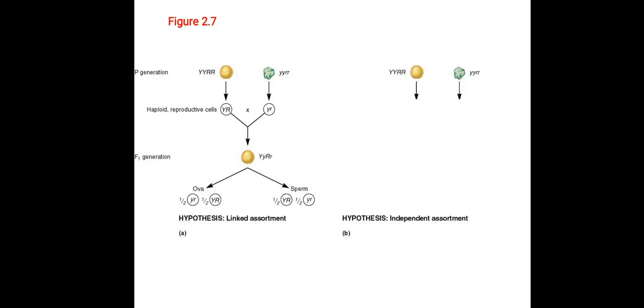And in the independent assortment, the parents remain the same. Same goes for the haploid reproductive cells. F1 generation also remains the same. But the gametes have recombined in various forms. You can see over here that the gametes are differing in their recombinations.